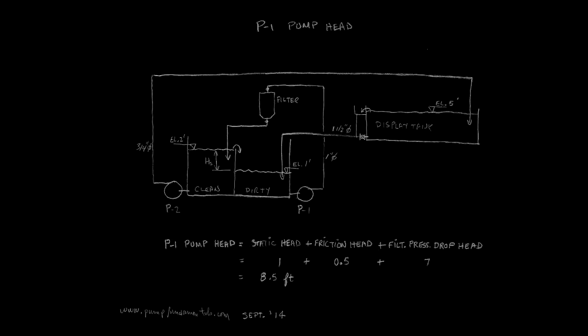Pump P1 connected to the filter will need a total head equal to the static head plus the friction head plus the filter pressure head drop. Its total head will be 8.5 feet. Pump P2 will have the head that we specified earlier.